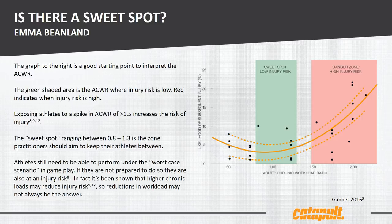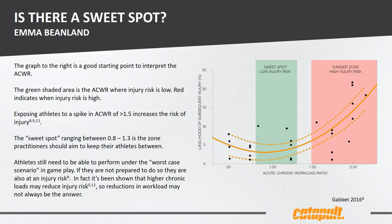This is a really good starting point if you're trying to interpret the acute chronic work ratio and understand where a safety zone might be. The green shading shows that a zone of 0.8 to 1.3 is a good zone to reduce the likelihood of subsequent injury, while also making sure the athlete is still prepared. We have to remember athletes need to be able to perform under the worst-case scenario. It's also been shown that a higher chronic load may actually reduce injury risk — so it's about finding the balance between not spiking loads and building athletes up to maintain a high chronic load throughout the season.